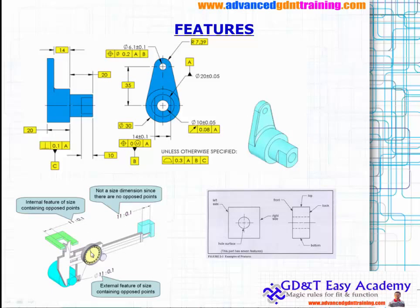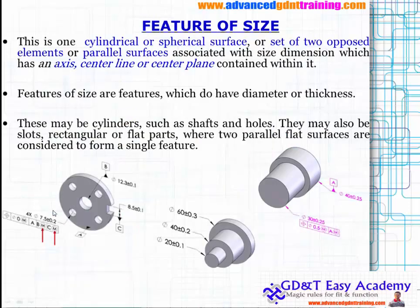If you see this particular figure, this particular diameter you can measure because this is an external feature. External features may be a diameter, a thickness, or any similar kind. But what about this L-shape? This particular shape you cannot measure directly, but you can interpret it — it is not a size dimension since there are no opposite points. You primarily need opposite points for measuring your dimensions. Here you can see how to use internal or external parts to measure. If you see this particular block, the internal slot width you can measure using a vernier caliper — and this is a feature.